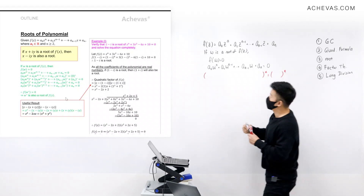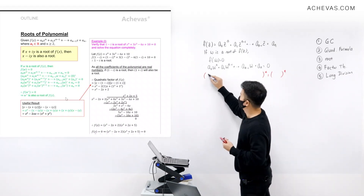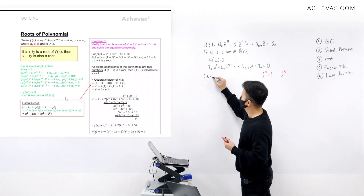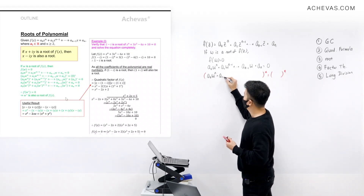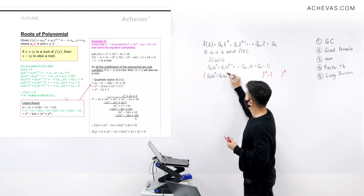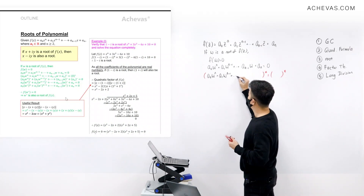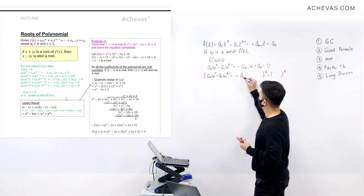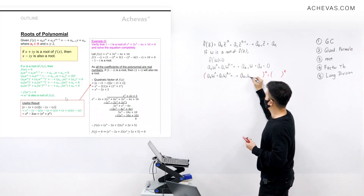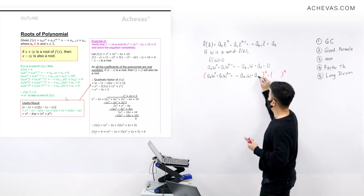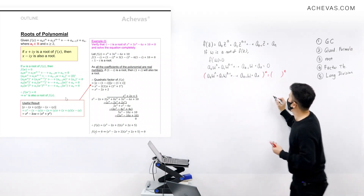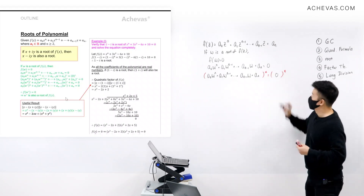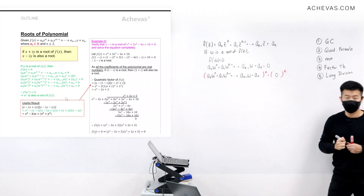So we are taking the conjugate of the entire left-hand side: a0 times w to the power of n, plus a1 times w to the power of n minus 1, all the way until a_{n-1} times w, plus a_n — all of this conjugated equals 0 conjugate.